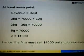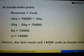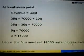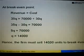Therefore, Q is equal to 14,000. The firm must sell 14,000 units in order to break-even.